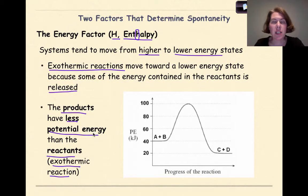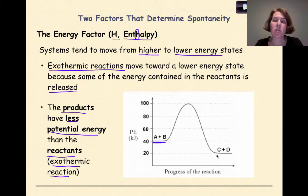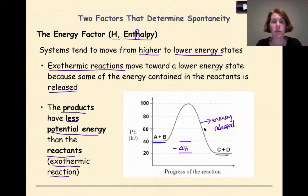Spontaneous reactions have a tendency to go towards lower energy levels. When looking at a potential energy diagram that represents a spontaneous reaction, you want to see that the potential energy of the reactants is higher than the potential energy of the products — meaning delta H is negative and energy is released. So you're looking for an exothermic reaction when considering this first factor.